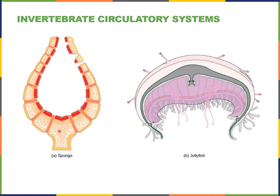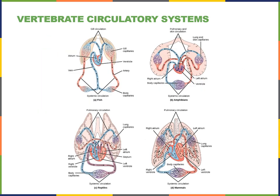We can see a sponge and jellyfish with open circulatory systems — not a distinct system. When we start getting into the vertebrates, we start to see an actual closed system where we have arteries, veins, blood vessels, and capillaries. They do look different — a fish versus an amphibian versus a reptile versus mammals. We care most about mammals because that is the human aspect, but I'll touch on the others just quickly.